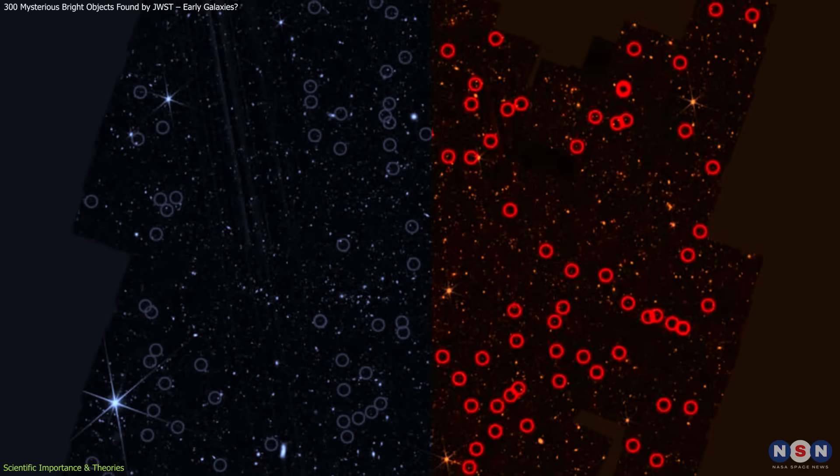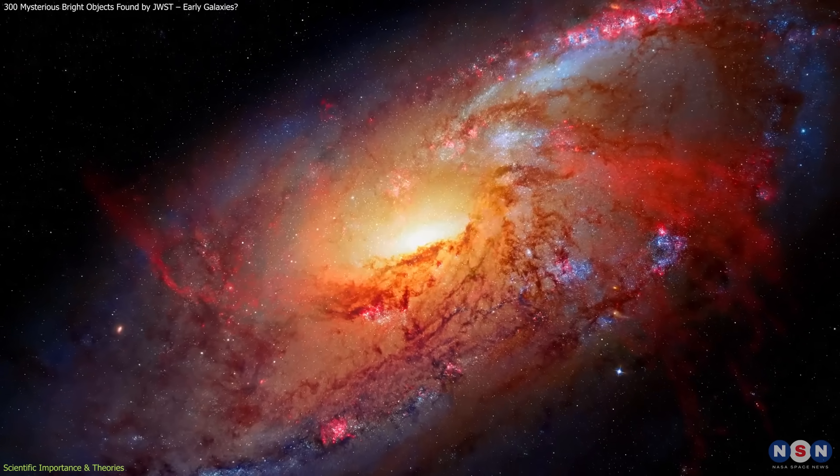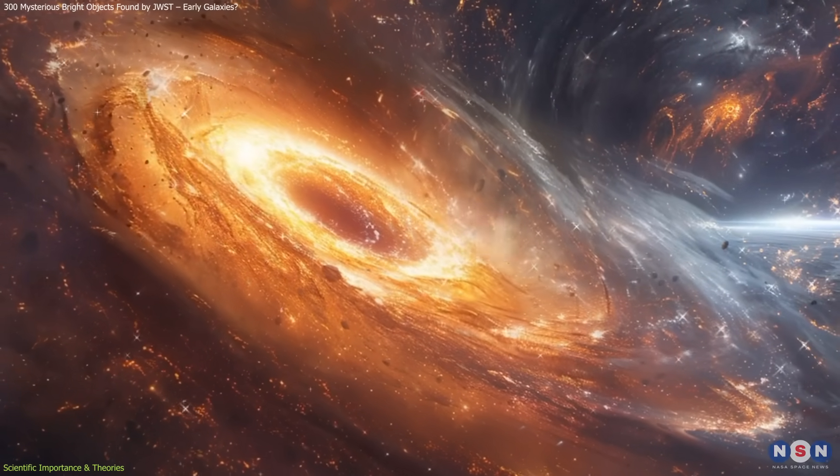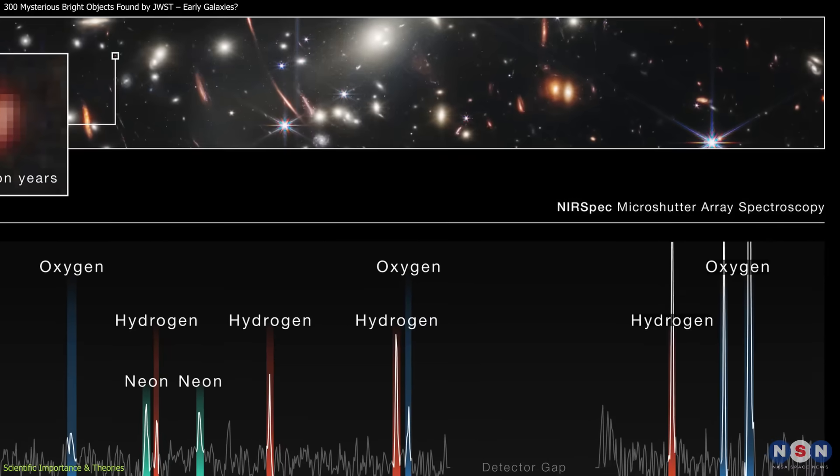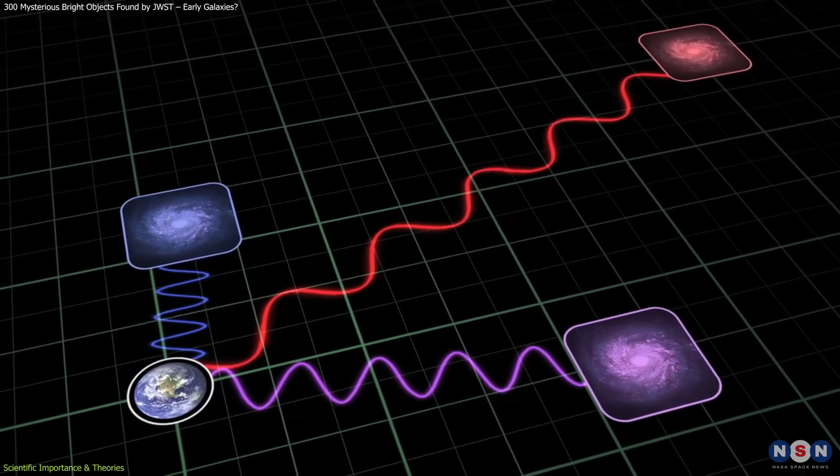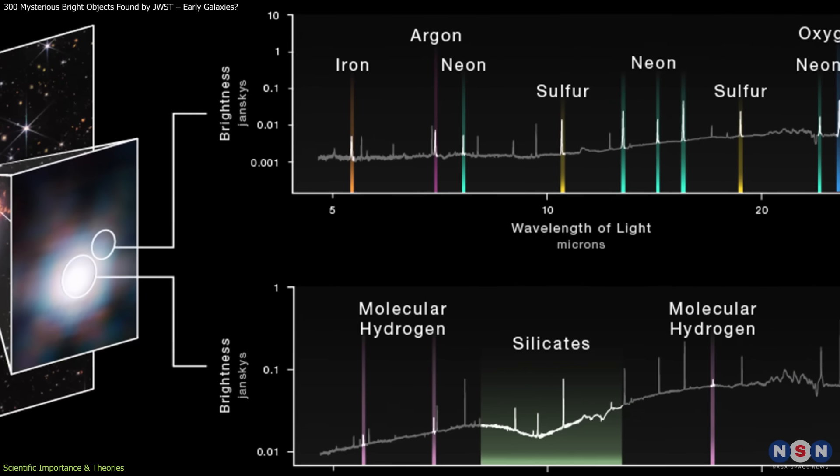It relies on color-based selection, which can be misleading when dust, unusual star populations, or active black holes affect a galaxy's light. This is why spectroscopic follow-up is essential. It can provide a precise measurement of redshift and reveal the chemical composition and structure of these objects.